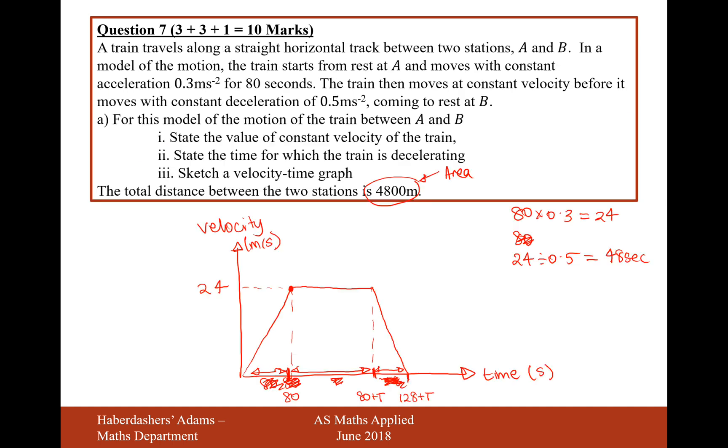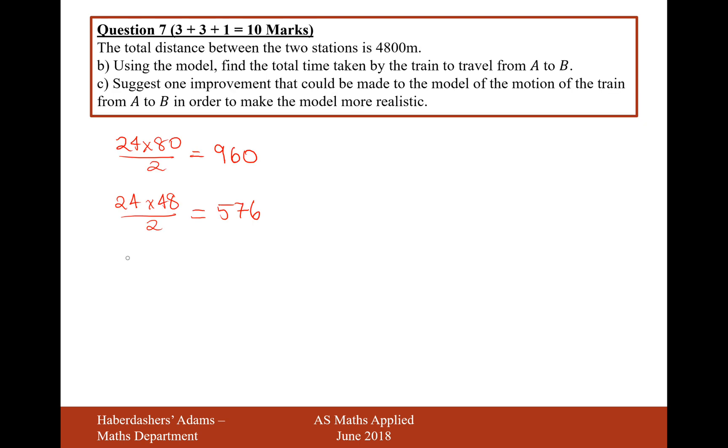And then the middle bit, which is a rectangle, will be a height of 24 and a time of T. So that's going to just be 24T. But we do know that all of these three elements here will add together to make 4,800.